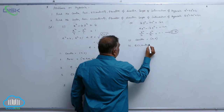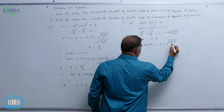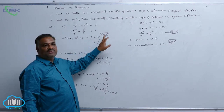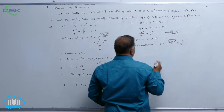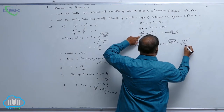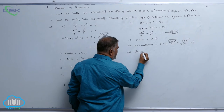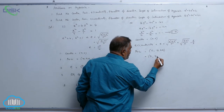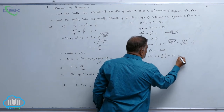For the conjugate hyperbola, eccentricity e = √(a² + b²)/b². Here, a² = 16 and b² = 9, so e = √(16 + 9)/9 = √(25/9) = 5/3. Foci = (0, ±be) = (0, ±3 · 5/3). The 3 cancels, giving foci = (0, ±5).